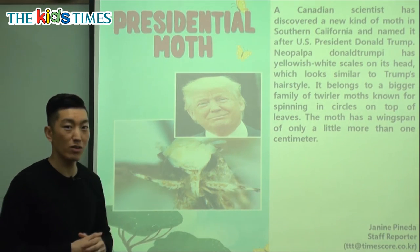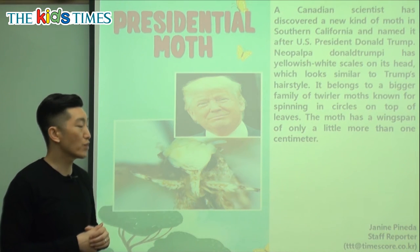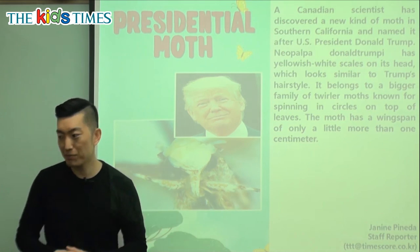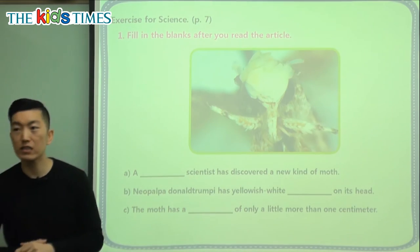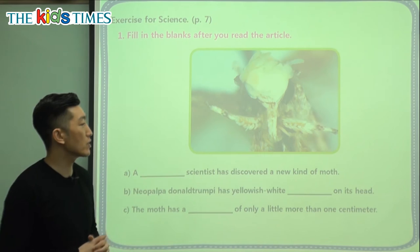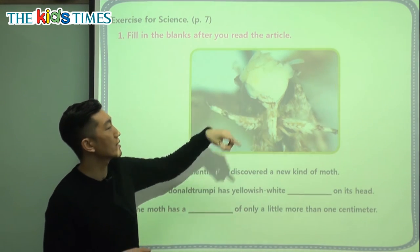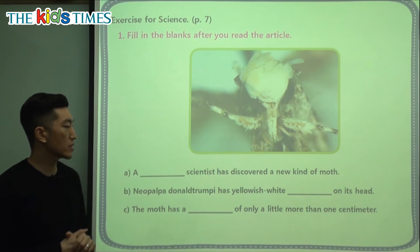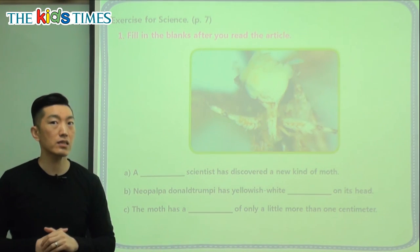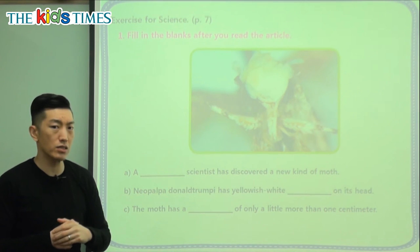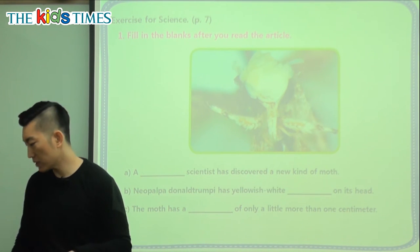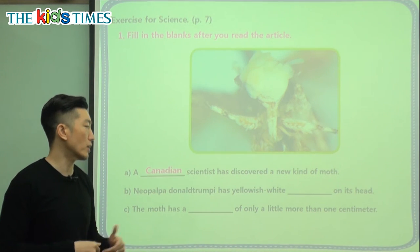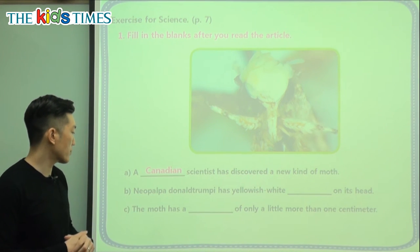This is a very interesting article and it's in honor of the new US president, Donald Trump — very interesting, a new type of moth. Let's take a look at today's comprehension questions. Here's another picture of the moth with the yellowish white scales on the head. A blank scientist has discovered a new kind of moth — where did the scientist come from? We said the scientist came from Canada, so we call that a Canadian scientist.